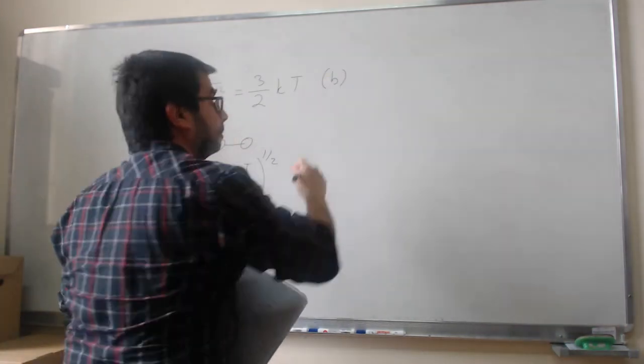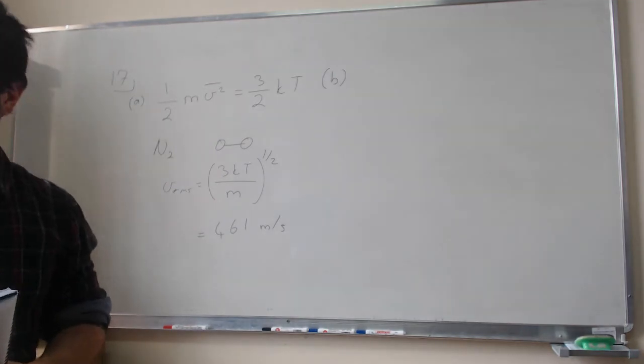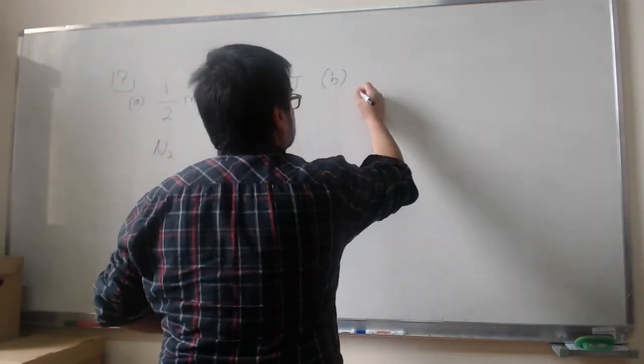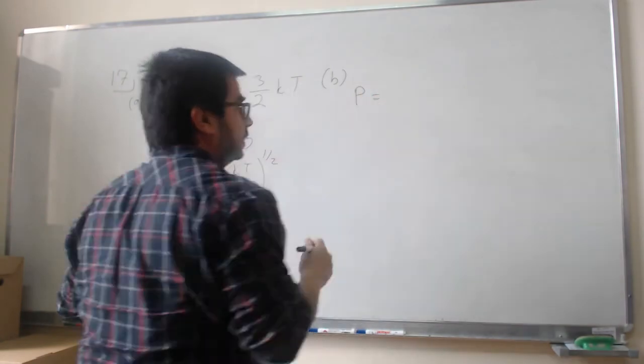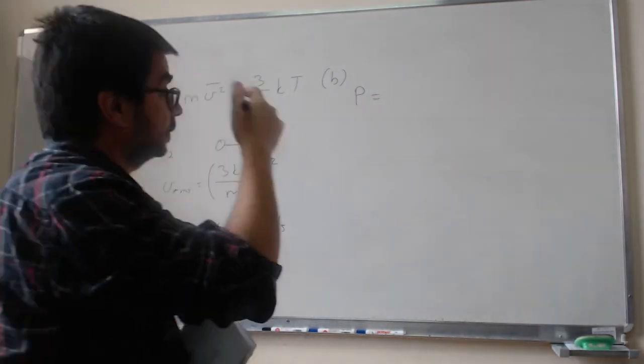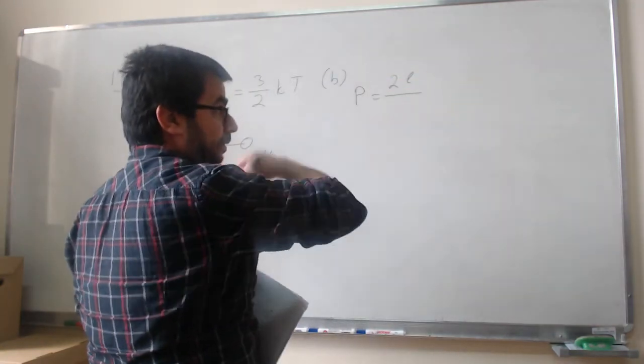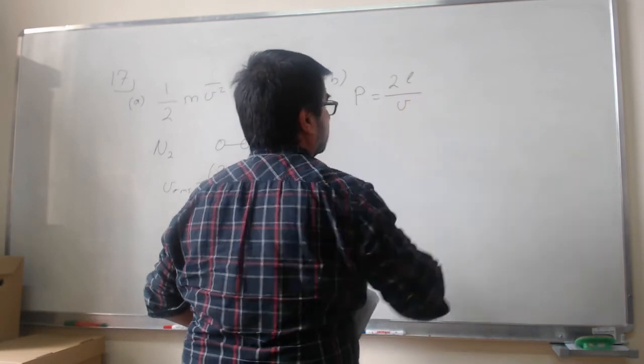And for part B, what they're asking is, how long it takes for, I'll determine how many times per second it will move back and forth across a 5 meter long room on the average, assuming it made very few collisions with other molecules. So they're asking for a frequency. I think it's easier to calculate the period. So the period, the time between two collisions with a given wall is just going to be the length of the wall times 2, because you go back and forth, divided by your speed.